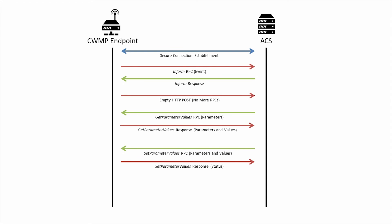The ACS makes any other RPCs it needs to during the session, such as set parameter values to change the state of the CPE, or set parameter attributes to set up a notification. When the ACS has no more RPCs to make, it sends an empty HTTP response, just like the CPE did earlier. When both the CPE and the ACS have done this, the session is over and it's time to tear down the connection.